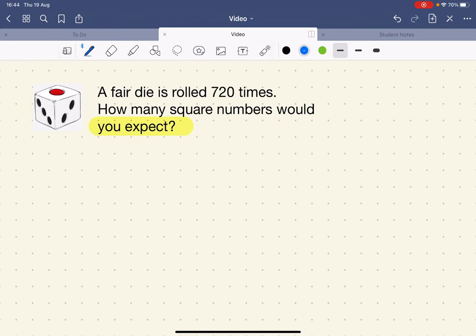To do this, we first look at the probability of getting a square number. On a die, the numbers 1 and 4 are square numbers. So we've got two square numbers, 1 and 4, out of six that are on a die. There's the probability.